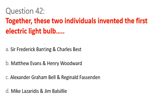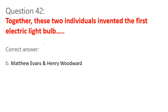Question 42. Together, these two individuals invented the first electric light bulb. A. Sir Frederick Banting and Charles Best. B. Matthew Evans and Henry Woodward. C. Alexander Graham Bell and Reginald Fessenden. D. Mike Lazaridis and Jim Balsillie. Correct answer: B. Matthew Evans and Henry Woodward.